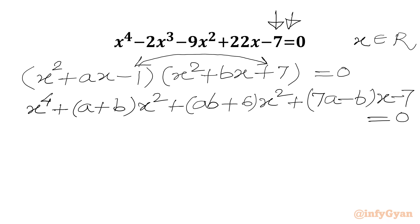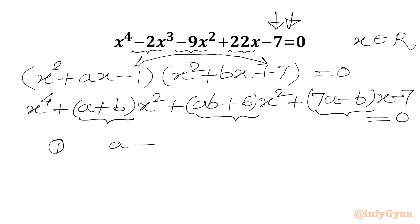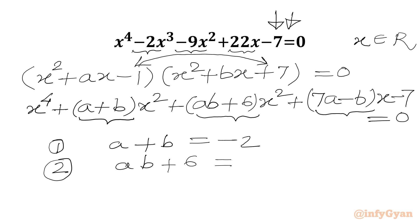Now we are going to compare the coefficients from both equations. So: a + b must equal -2, ab + 6 must equal -9, and 7a - b must equal 22. So we can write three equations: equation 1: a + b = -2, equation 2: ab + 6 = -9, and equation 3: 7a - b = 22.